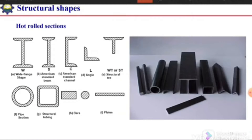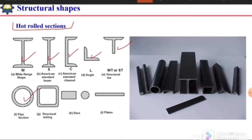Structural shapes commonly used in steel structures fall into three types: hot-rolled sections, cold-formed sections, and built-up sections. Hot-rolled sections are fabricated by bringing steel into a plastic state and rolling it into the desired shape. A variety of standard shapes are available in the market, including W sections, I sections, C sections or channel sections, angle sections, T sections, pipe sections, circular sections, box sections, bars, and plates.